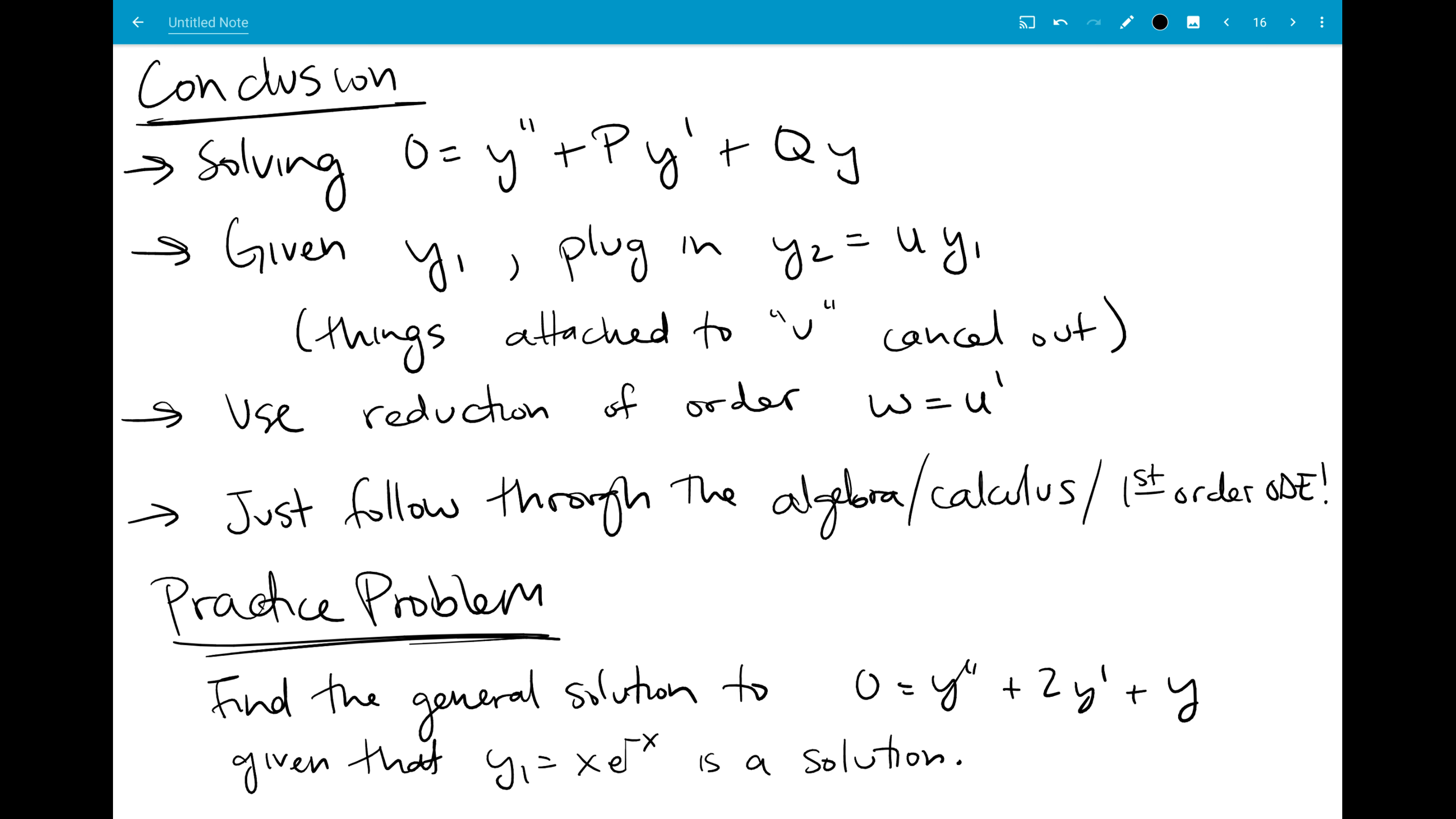You're going to be given that y1 equal to x e to the minus x is a solution. And so you're just going to start following our steps to try and find y2. So you're going to do y2 is u times x e to the minus x. You'll have some messy product rules to take, but you're going to just plug everything in and it'll become a lot simpler after that. So go ahead and work on that. Be ready to ask questions about this section in class, and I will see you then.